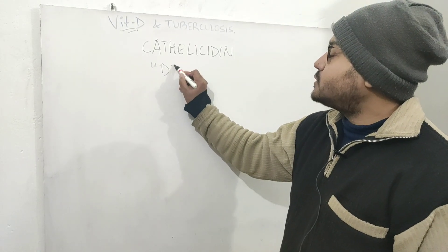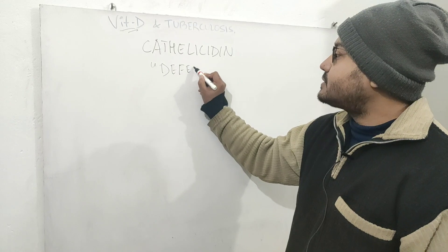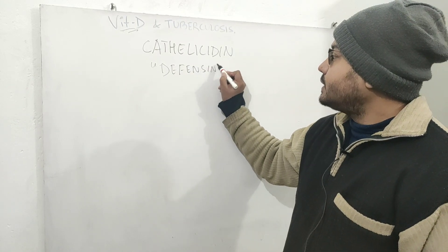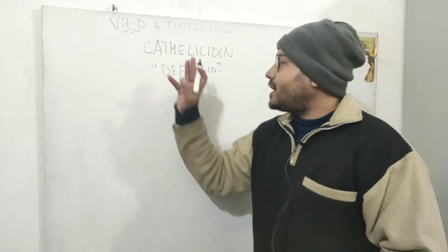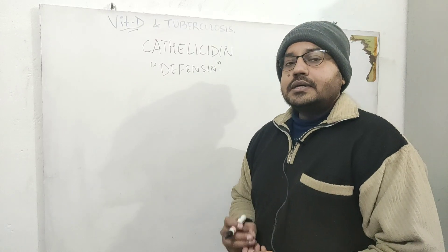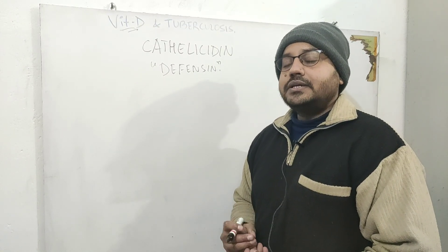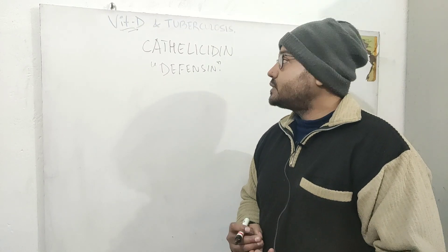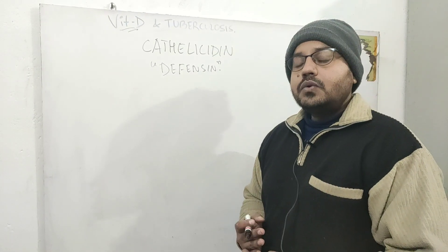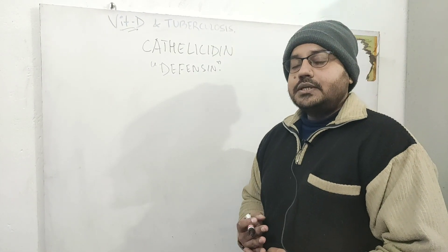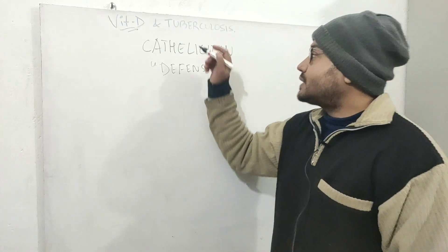Cathelicidin is part of your defense system and is very potent against certain bacteria like mycobacterium, which causes tuberculosis. So when you are low in vitamin D, you are more likely to develop tuberculosis.